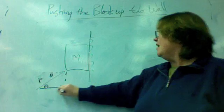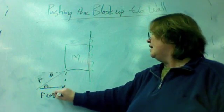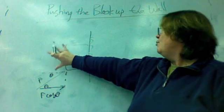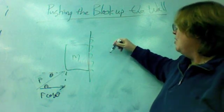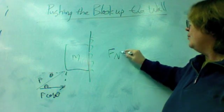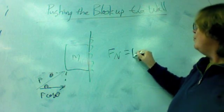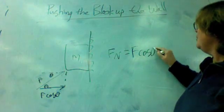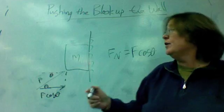So this, F cosine theta, is what is pushing the mass into the wall, and the mass has to push back with an equal and opposite force. F cosine theta then will be the normal force, and we're going to play around with friction.